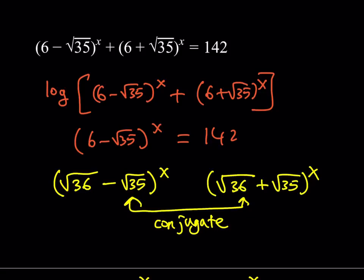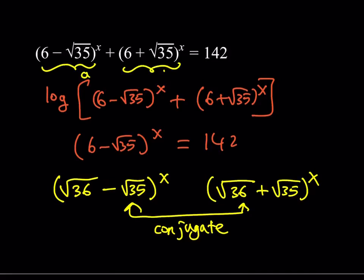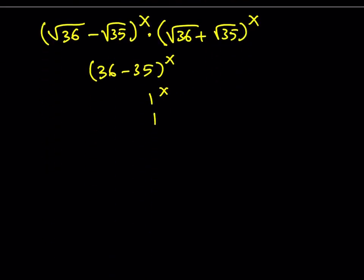Their product is 1 and their sum is 142. So it's kind of like this: if you call the first term A and the second term B, then A plus B equals 142, and A times B equals 1. This is a system of equations, and you can turn it into a quadratic. That's one way to approach it.